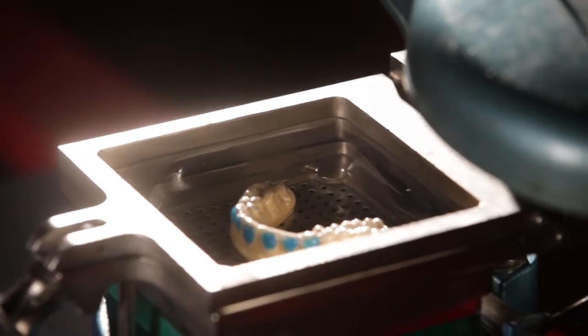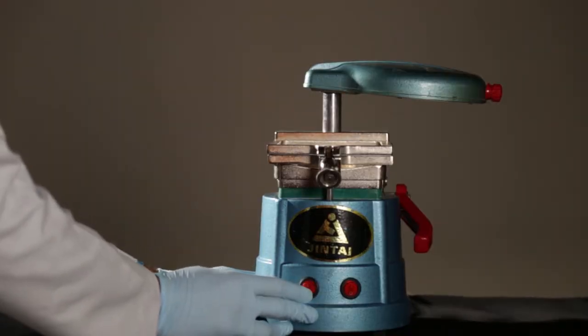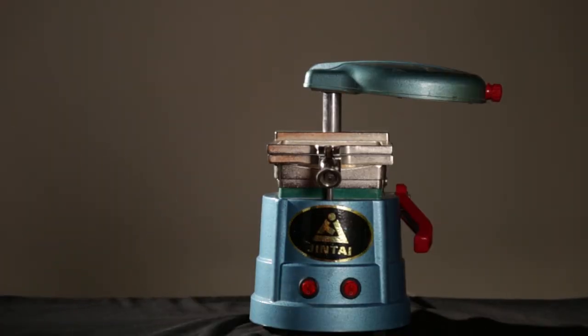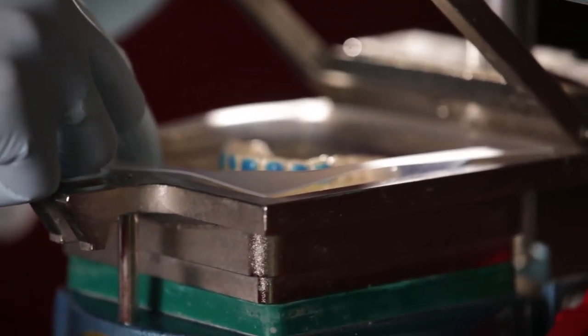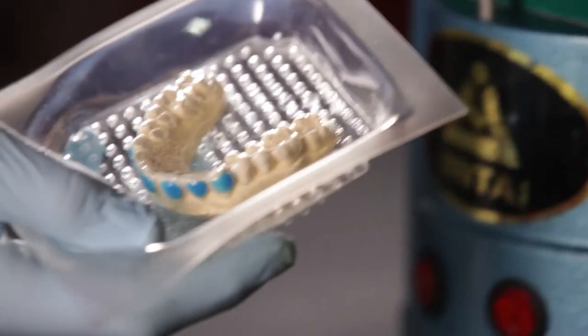You can see how it is closely adapted to the cast. After a couple of minutes, we can turn off the vacuum. It is very important to let the tray cool down before retrieving the model.